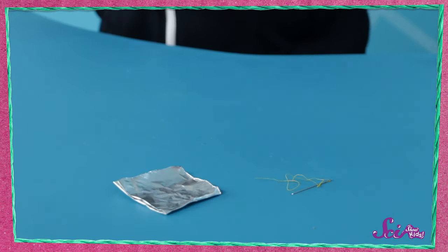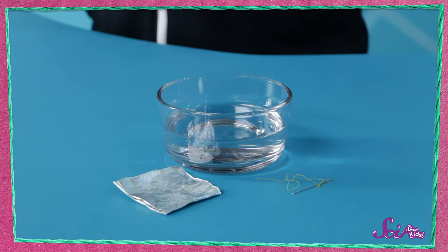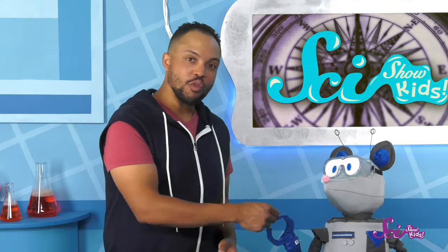You can make a compass, too. Just make sure you get a grown-up to help you. To make a compass, you'll need a sewing needle, a piece of aluminum foil, and a clear container of water with a flat bottom. Oh yes, and a magnet! Thanks, Squeaks!